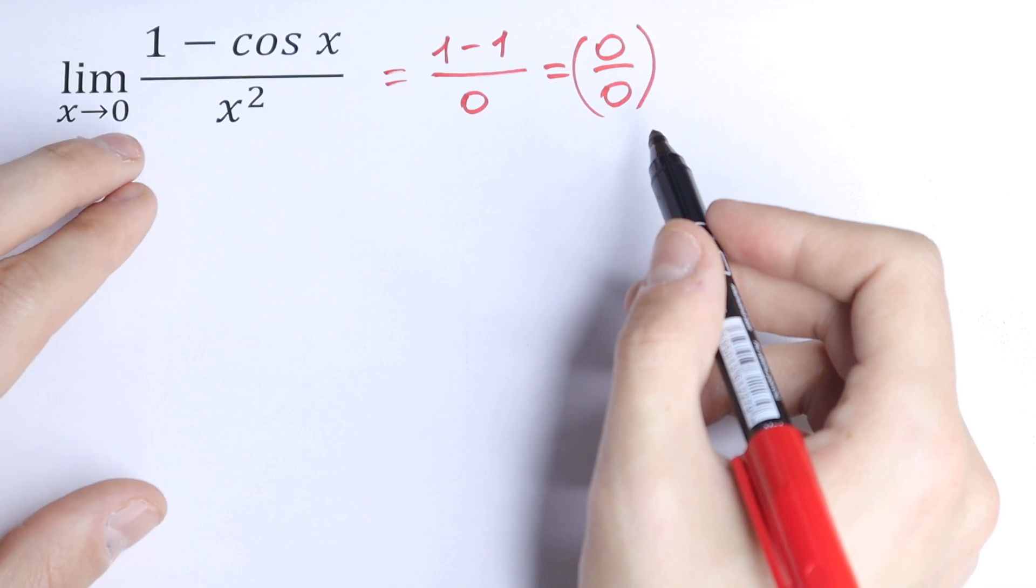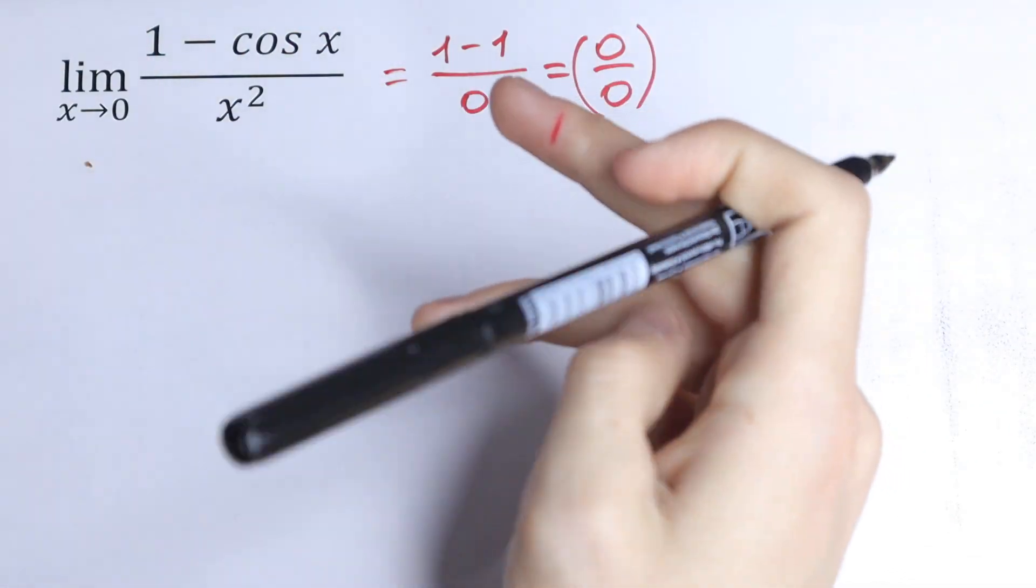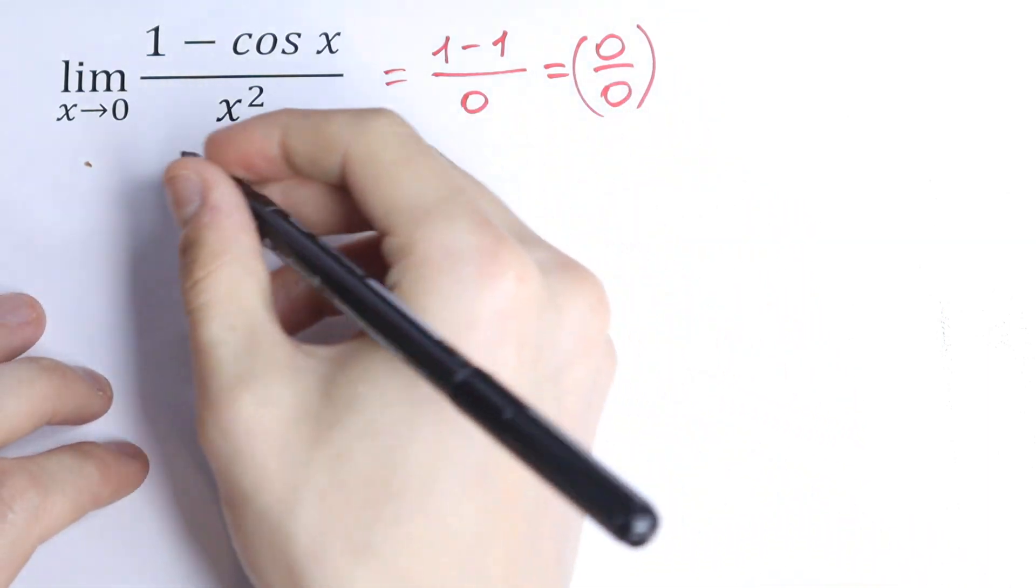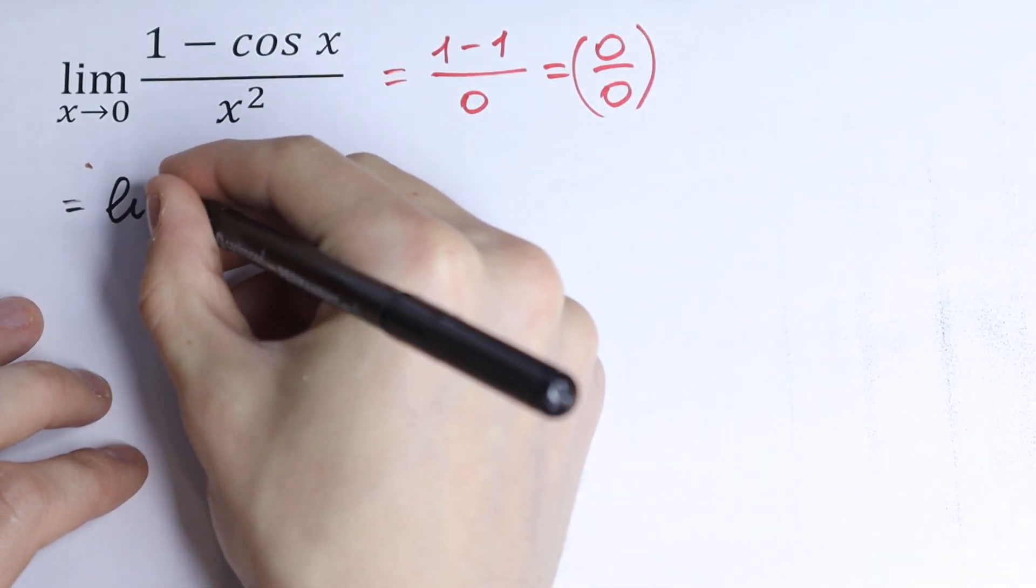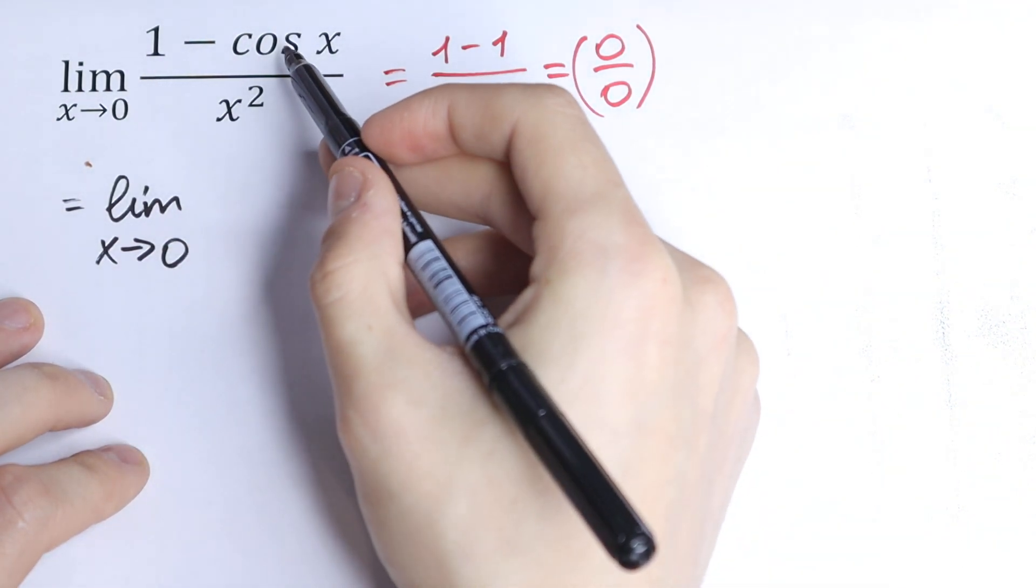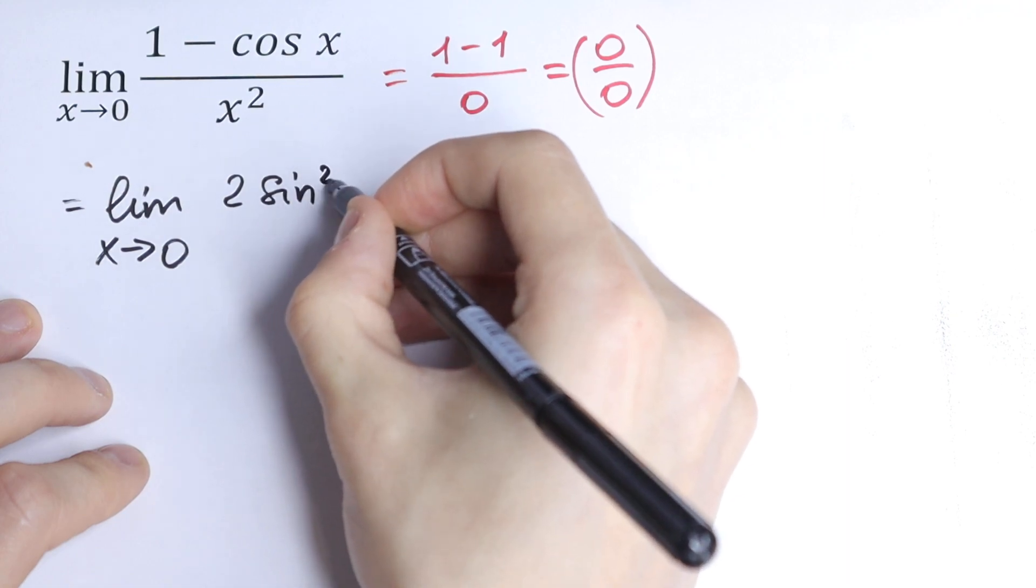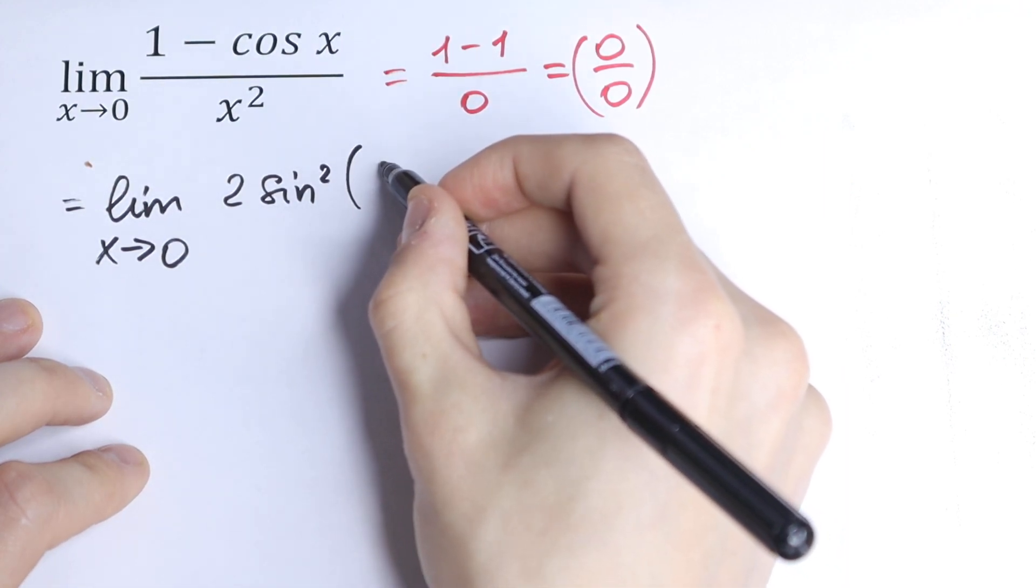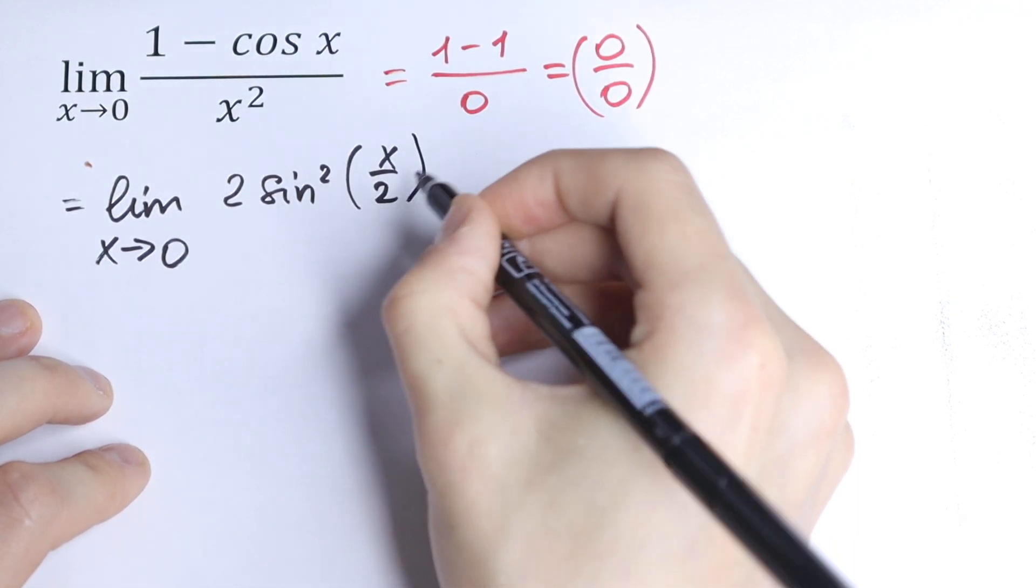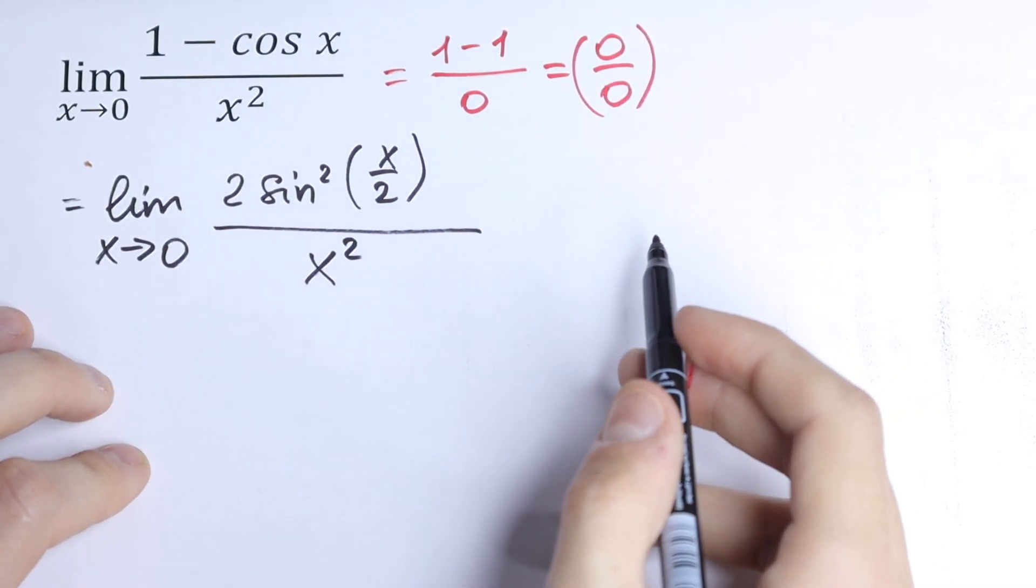What are we going to do in our case? We can simplify our numerator. So we can write 1 - cos x as lim(x→0) of 2sin²(x/2) over x². So what are we going to do next?